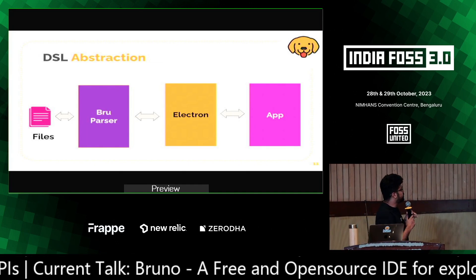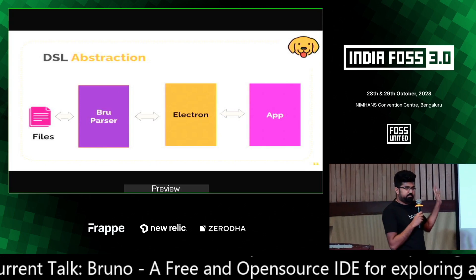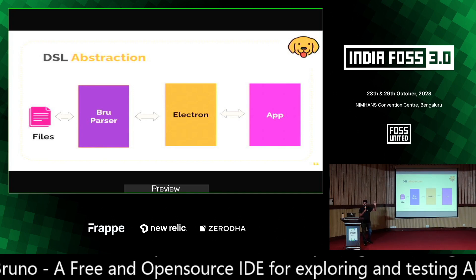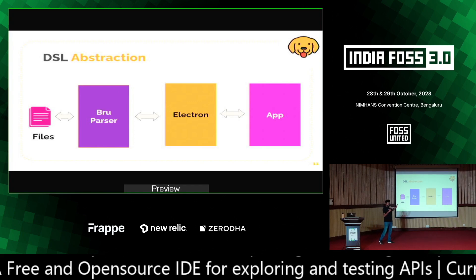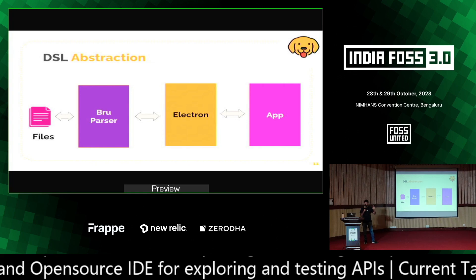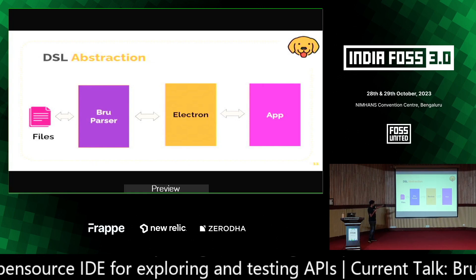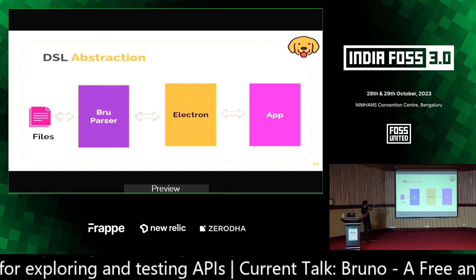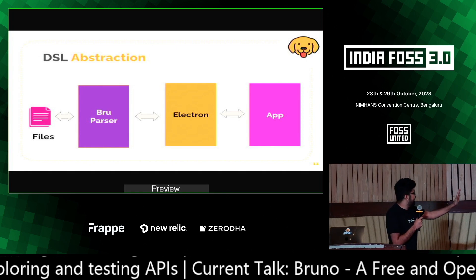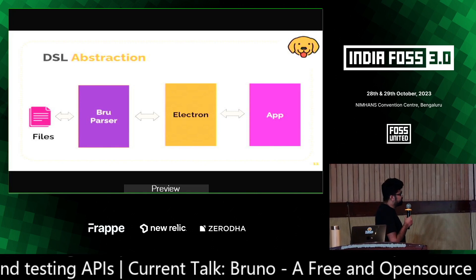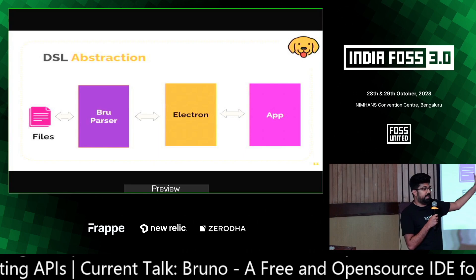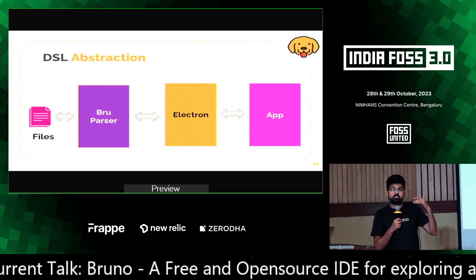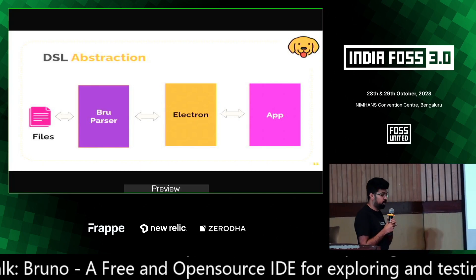Let's move on to DSL abstraction. In Bruno you have the app, and we have the bru file. The entire app and Electron layer has no knowledge of what the bru language is. There is a tiny module — about five files — that converts between bru and an internal JSON DSL when reading and writing. This means in version two, we're going to support not just bru language but also JSON, YAML, or TOML as storage formats.